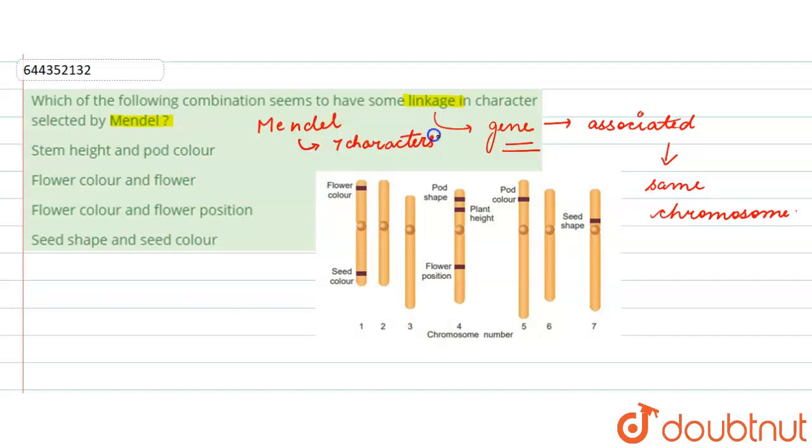The first one says stem height and pod color. From this figure, we can see that stem height is on chromosome number 4, whereas pod color is present on chromosome number 5. So there won't be any linkage in this. This option is wrong.